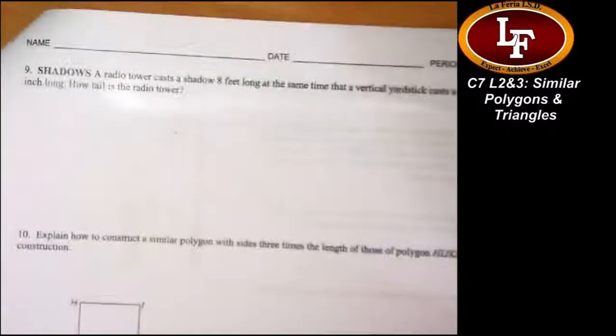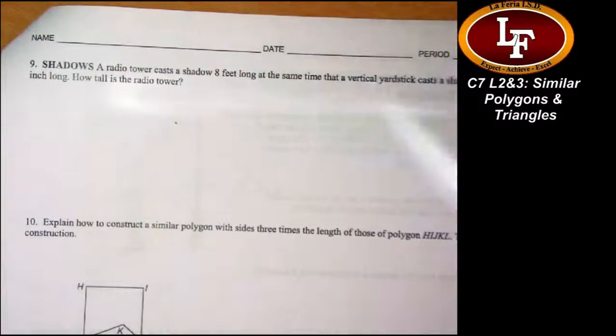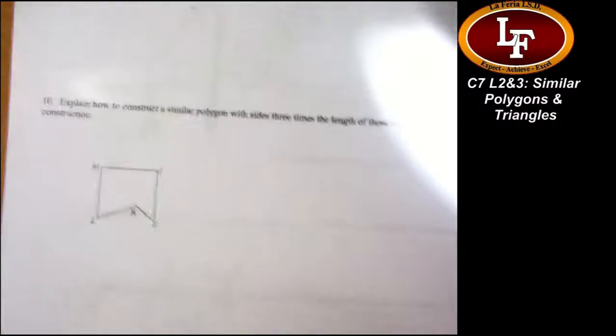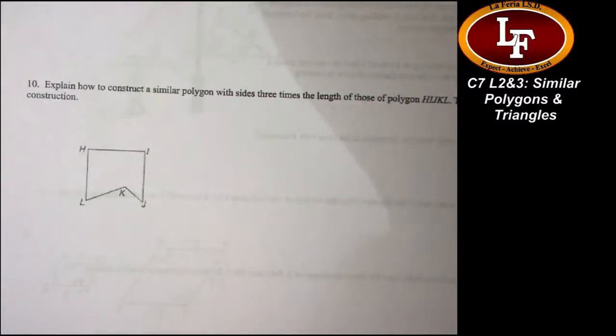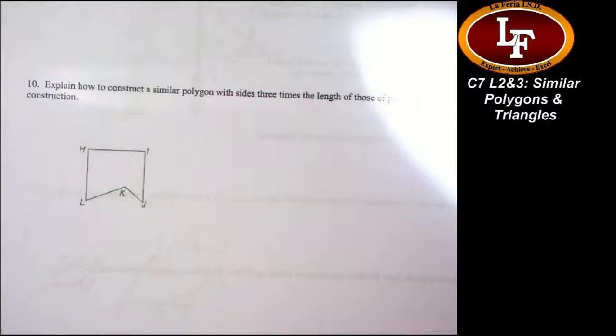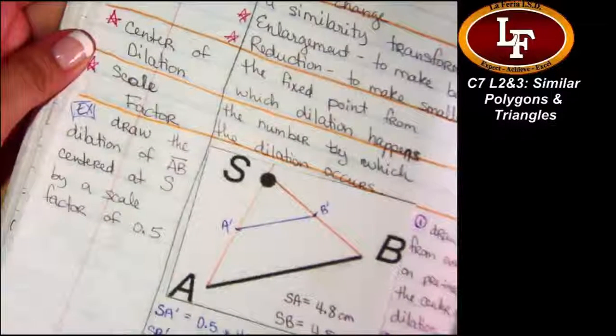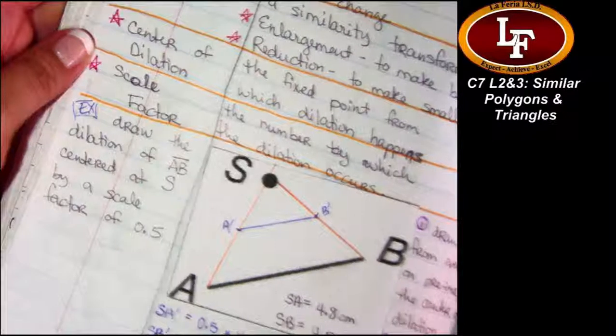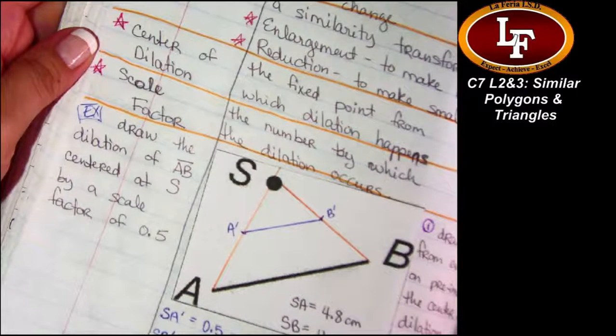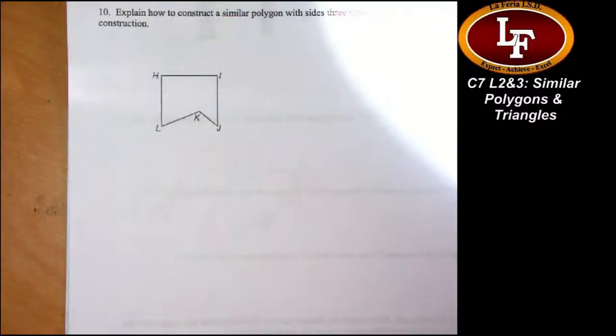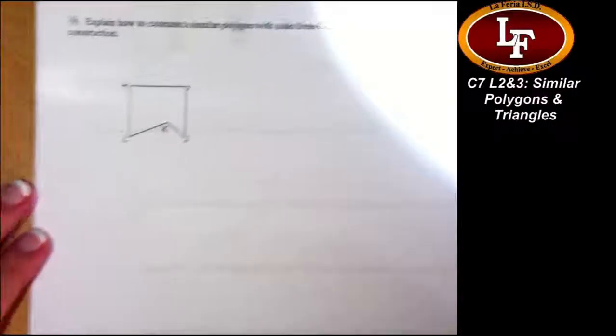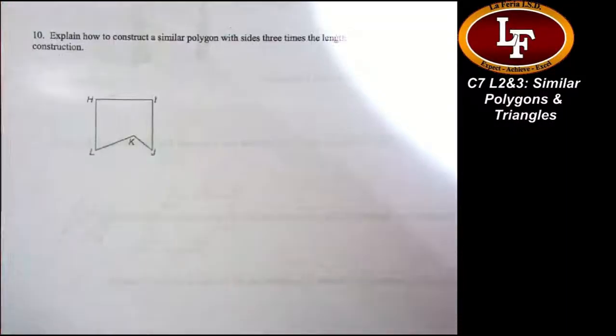Okay? Nine, same thing. I recommend that you draw a radio tower and you draw a yardstick. Number ten, you have to explain how to construct a similar polygon. I'm going to give you a hint. Are you ready? Here's your hint. If I can find the section in my notes. Hello, notes. I'm going the wrong way. Hi, dilation construction. You create similar polygons for me. All right? So go back to dilations. See how to do that, and that should help you figure out how to explain how to construct a similar polygon.